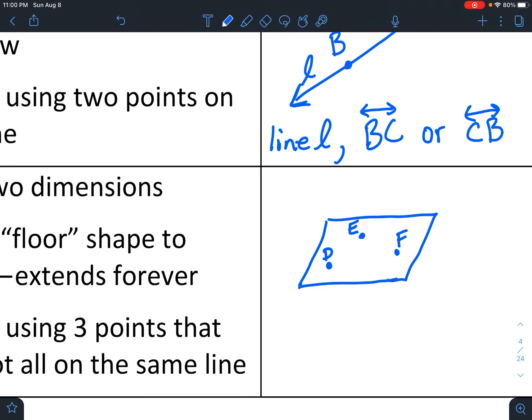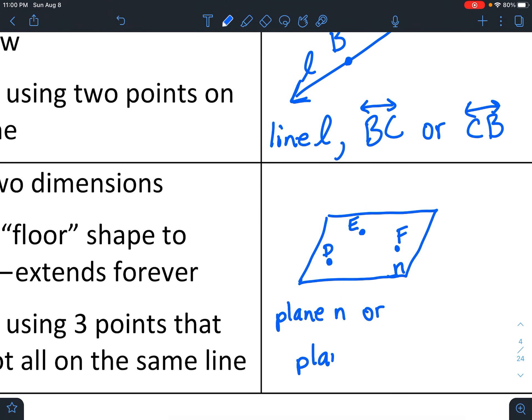So you could say, and you might sometimes see a little letter in the corner. If you see a little letter in the corner, it's kind of like the L with the line. It might be plane N. That's just a way to identify it. Or you can just list three points that are in that plane. So you might say plane D, E, F. It doesn't matter what order they're in.